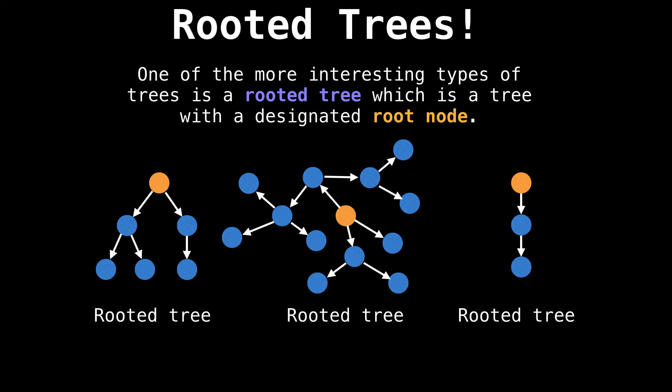However, it's also possible for edges to point towards the root node. But these trees are much rarer from my experience.